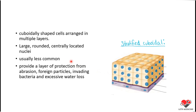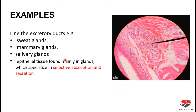It is a rare kind of epithelium and will not be found much in the body. It performs the functions of protection from abrasion, foreign particles, and invading bacteria. An important function is also preventing excessive water loss. This type of epithelium is especially found in sweat glands.